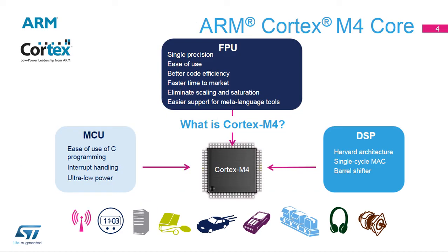Based on the ARM Cortex-M4 core, the STM32WB series doubles the DSP capability of a single-cycle DSP-MAC for data processing and the single-precision FPU performance. In addition to the radio control capability offered by the ARM Cortex-M0 Plus core, the STM32WB offers more control performance and enhanced execution determinism.